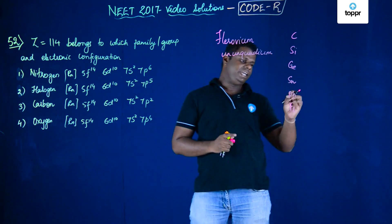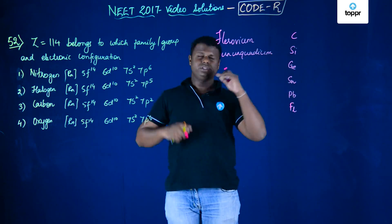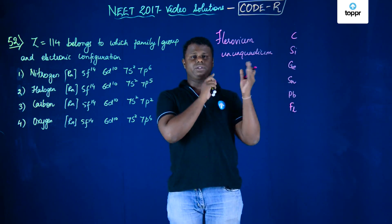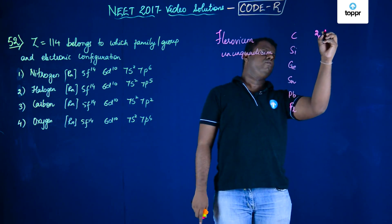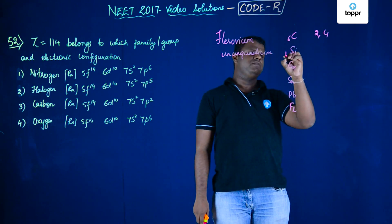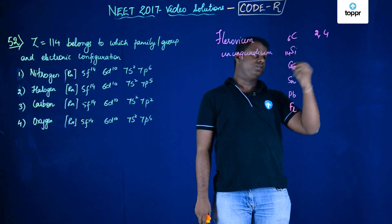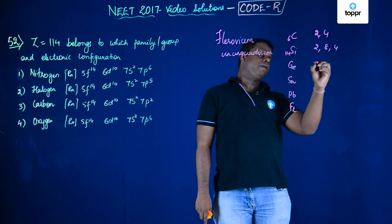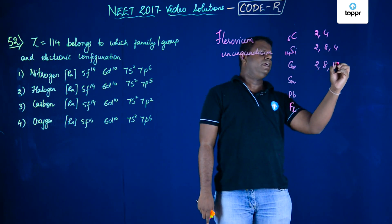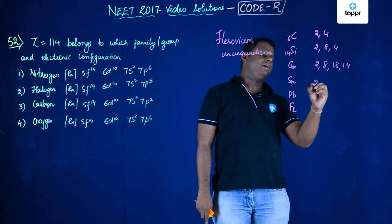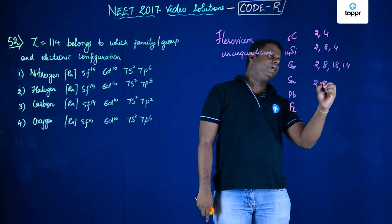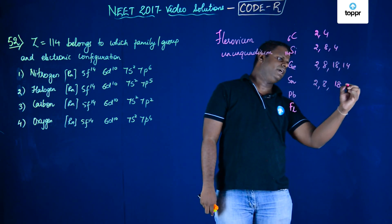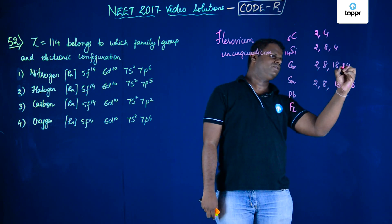Lead has atomic number 82. Let's write the electronic configurations: carbon (Z=6) is 2,4; silicon (Z=14) is 2,8,4; germanium is 2,8,18,4; and then tin is 2,8,18,18,4.